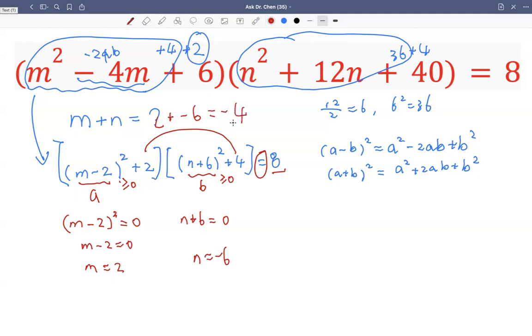Special questions like this always need some special strategy. So in this case, we see we complete two squares. Because squares in the real number system have a least value of 0, we use that property.